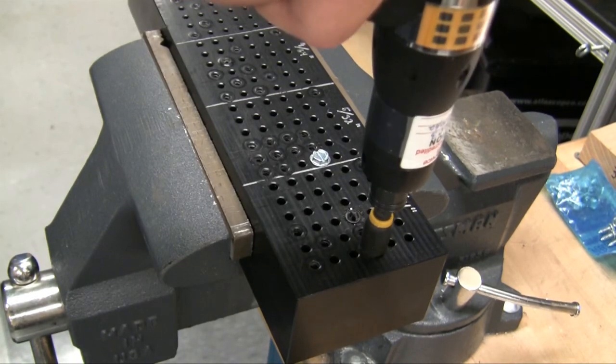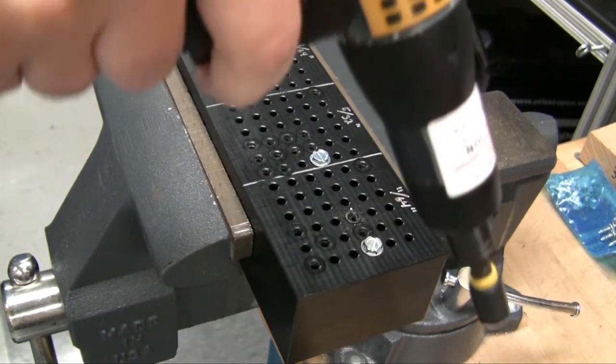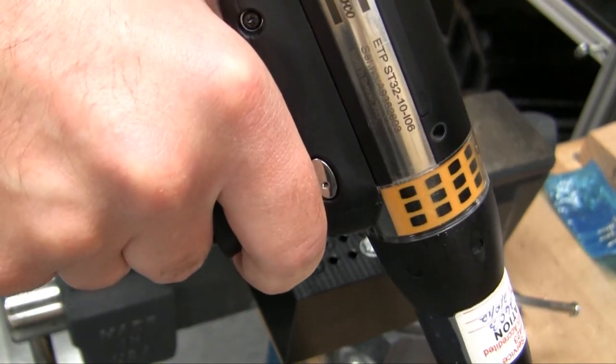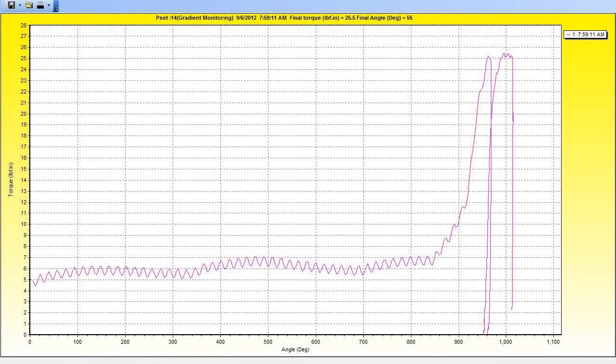When running the larger hole with gradient monitoring, the tool shuts off at 25 inch pounds when it detects the yield point is being approached and before the hole strips.